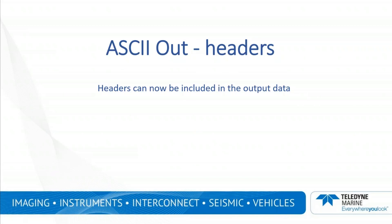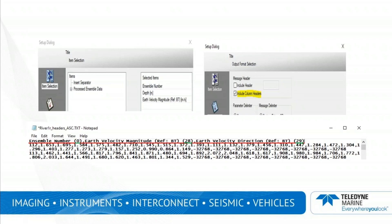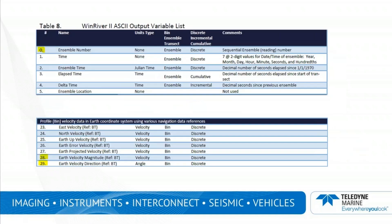Headers can now be included in the generic ASCII output data. In this example, the header which has ensemble number, velocity magnitude, and velocity direction can be seen on the first line of the output. The numbers highlighted in green are the reference numbers in the documentation, which I will show you on the next slide. This is a few snippets from the documentation showing the reference numbers in yellow. Note that the comments section has a brief description of the items.